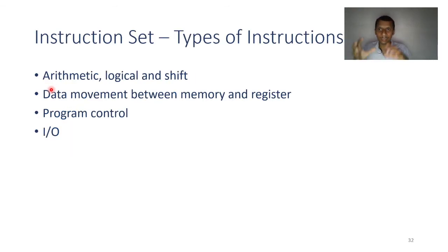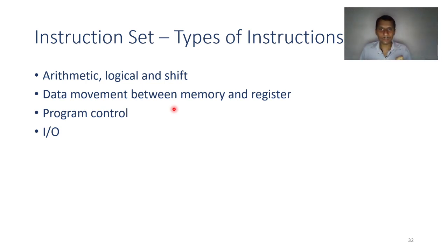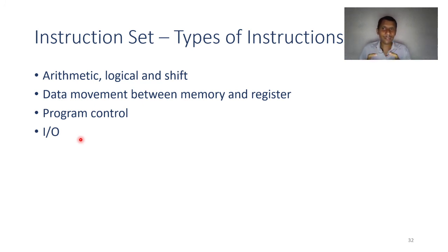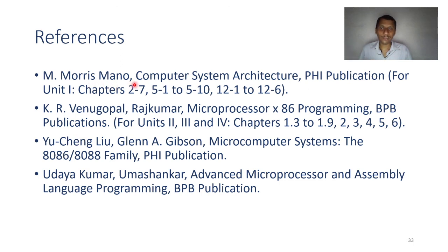These are the basic computer instructions. In the 8086 microprocessor, they are categorized into subcategories like arithmetic, logic, and shift instructions; data movement instructions between accumulator, registers, and memory; program control instructions such as jump or skip; and I/O instructions. To explore further, a great reference is Morris Mano's Computer System Architecture book, which is simple to read and understand. Happy learning — thank you for watching, see you in the next video.